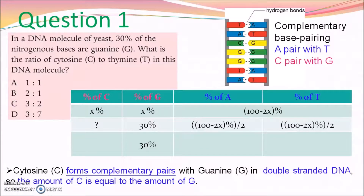For question 1, we would like to calculate the ratio of cytosine to thymine in the DNA molecule. Firstly, I would like to remind you of the complementary base pairing in the double-strand DNA molecule: A pairs with T, and C pairs with G. Therefore, if you would like to calculate the ratio of C to T, we need to calculate the amount of A, T, G, C first.